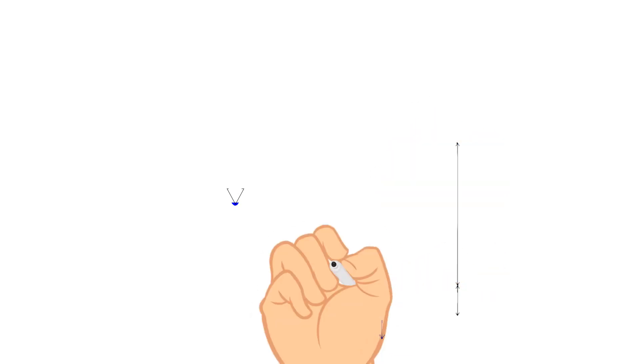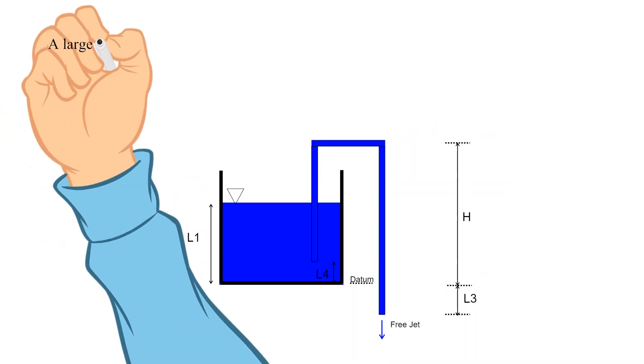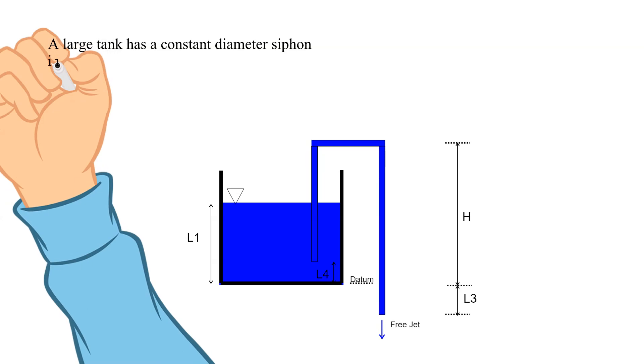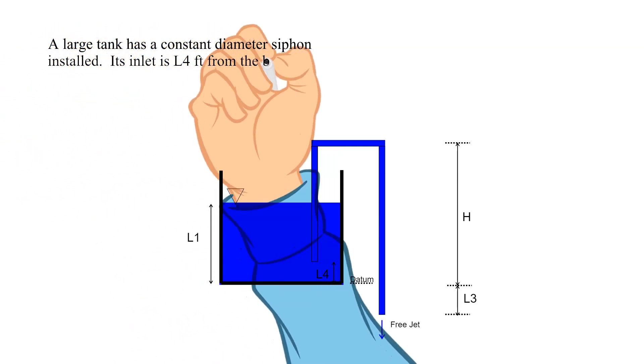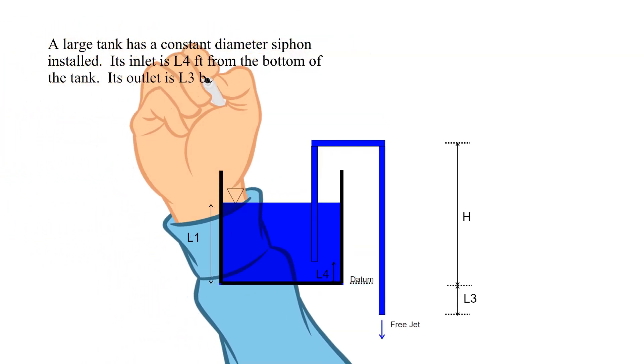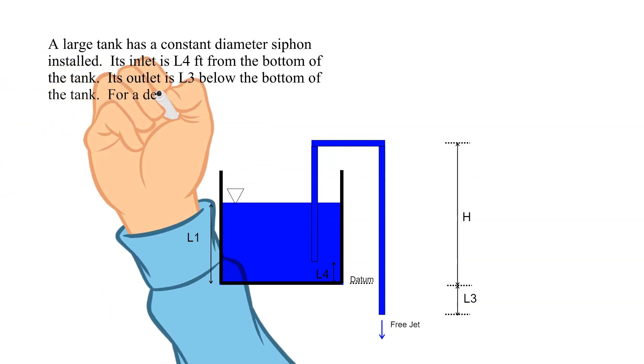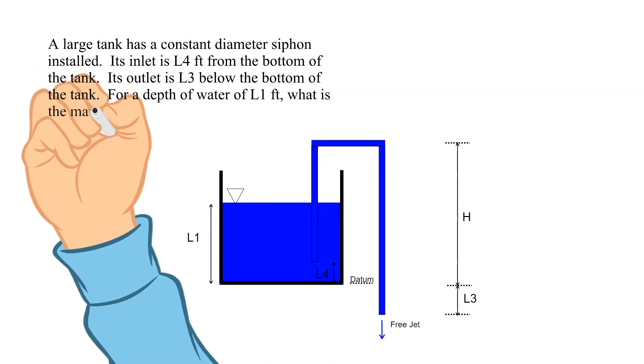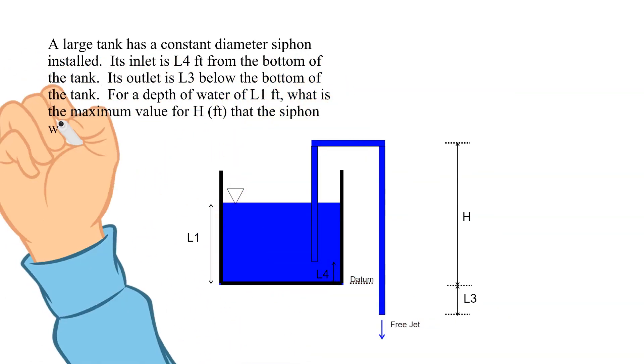This is the problem statement and the corresponding drawing. A large tank has a constant diameter siphon installed. Its inlet is L4 feet from the bottom of the tank. Its outlet is L3 feet below the bottom of the tank. For a depth of water of L1 in feet, what is the maximum value for H in feet that the siphon will operate?